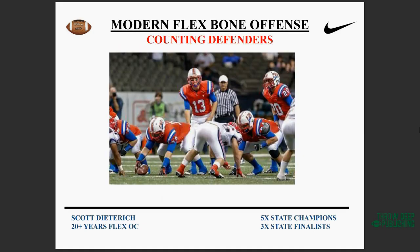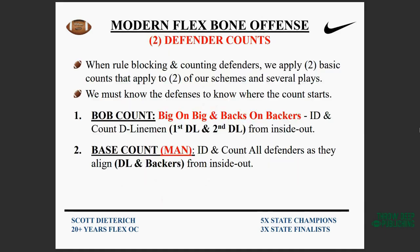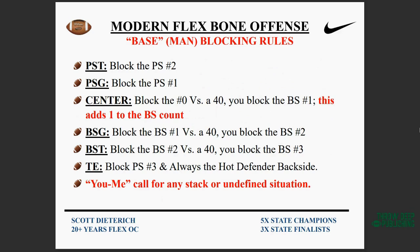Once you get into option football, how you count defenses — not just identify them — is very important. We have two basic count systems: a BOB count (Big on Big, Backs on Backers), where we count the down linemen first and then the backers; and a base or man count, where we identify all defenders from inside out. If we're base blocking something, usually on the backside, we count defenders from zero outward, with the center going backside if he doesn't have a zero man.